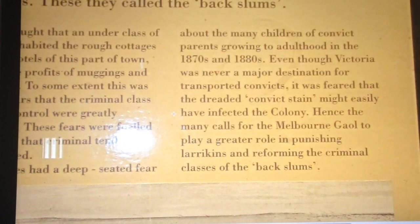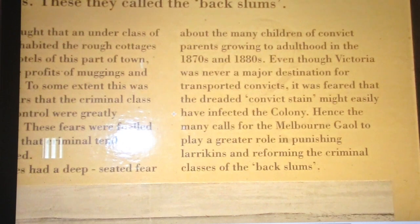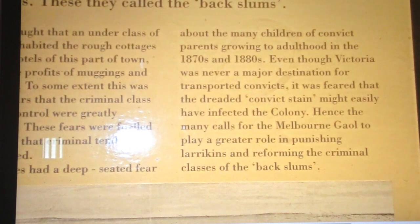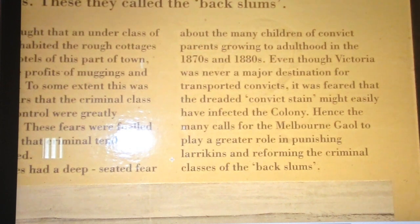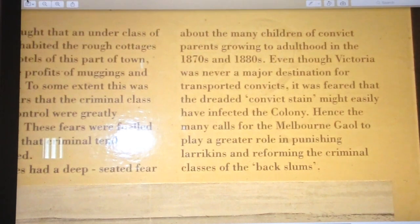Victoria — the great state of Victoria — was never a major destination for transported convicts. New South Wales, Tasmania, and Western Australia were major hubs; Victoria was not. It has a different history, a different regional identity. It was feared that the dreaded convict stain might easily have infected the colony, hence the many calls for Melbourne Jail to play a greater role in punishing larrikins and reforming the criminal classes of the back slums. The larrikins — the low lives — you still hear this term in Australia today.